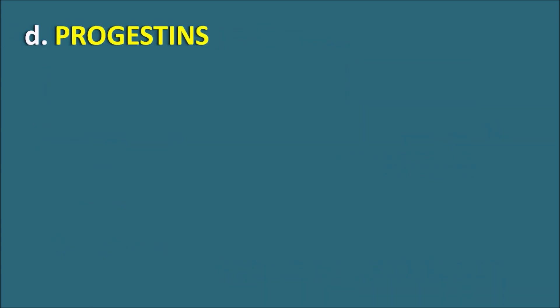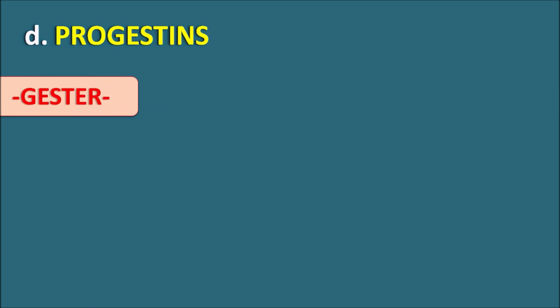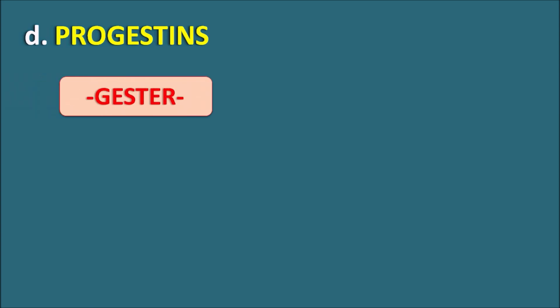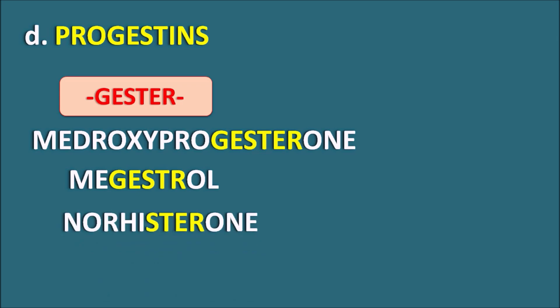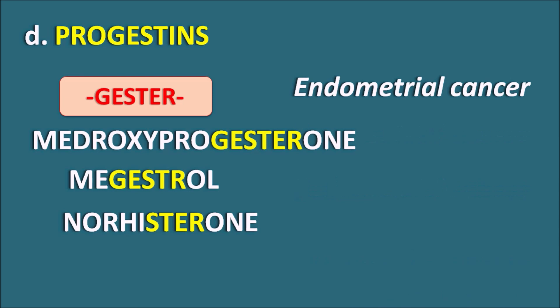The next category is progestins, indicated by the infix -GEST- or -GESTER-. One drug is medroxyprogesterone, which contains the infix -GESTER-. Another is megestrol, which does not have the E after the T. Similarly, another drug is norethisterone. The infix -GESTER- or -HSTER- can be associated with progestins. These drugs can be used in the treatment of endometrial cancer.